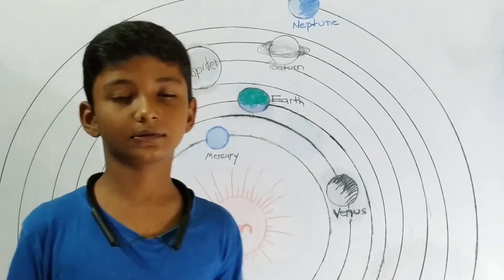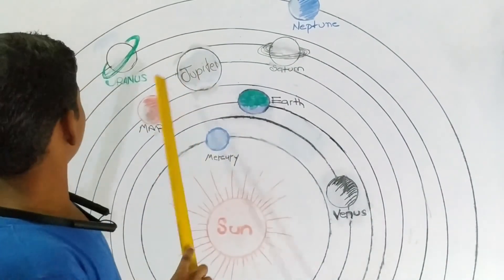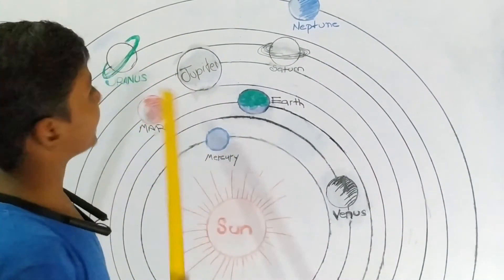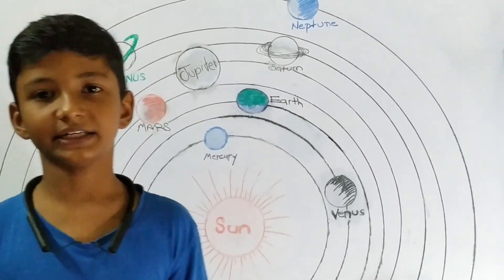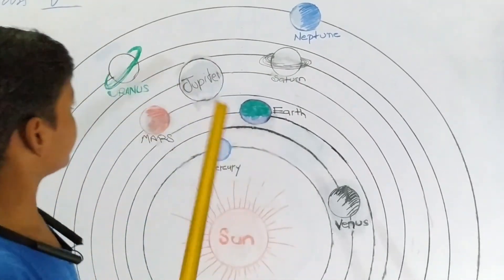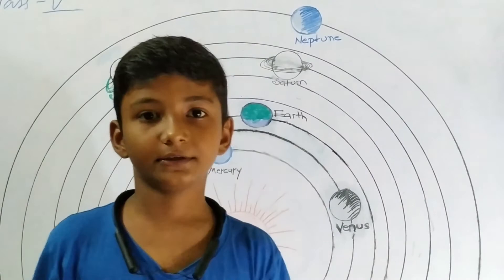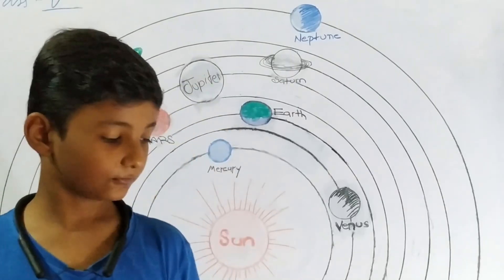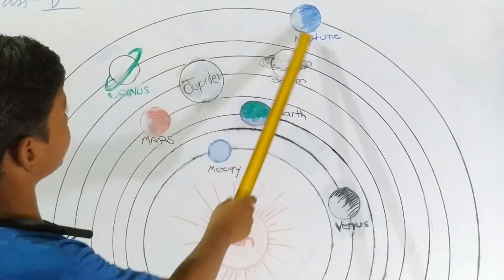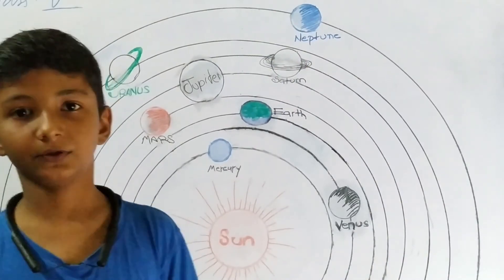Neptune is the eighth planet in our solar system, very far from the Sun. It is a gas giant without any solid surface.